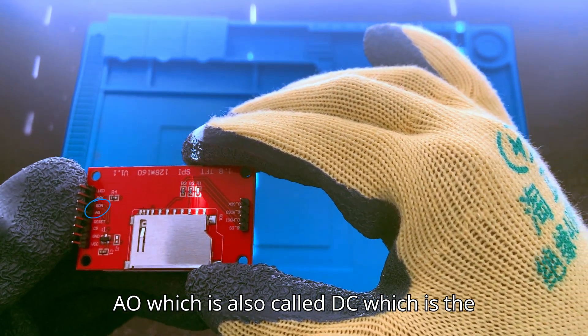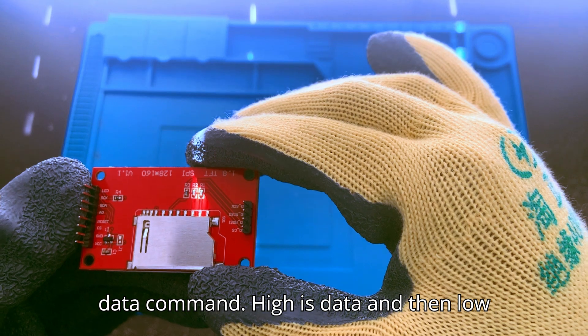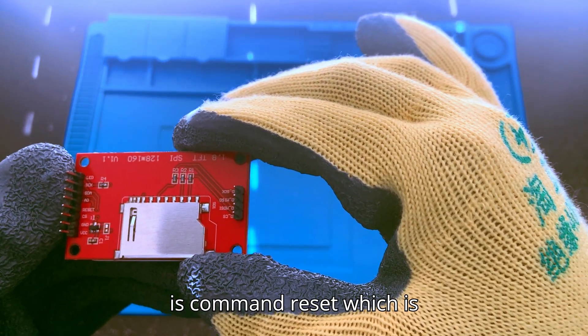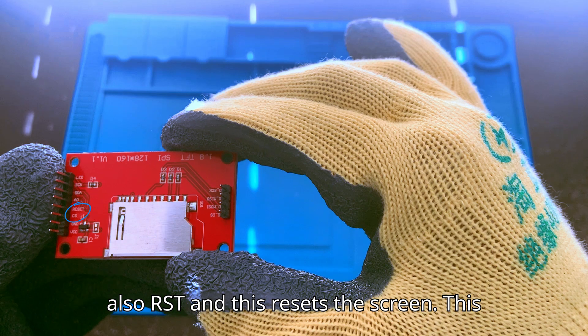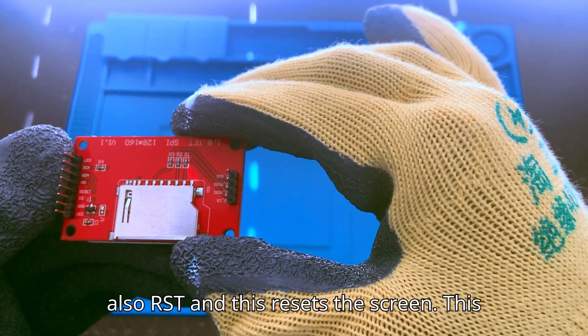AO, which is also called DC, is the data command pin. High is data, and low is command. Reset, which is also RST, resets the screen. This is active at low.